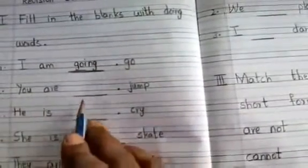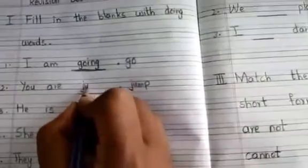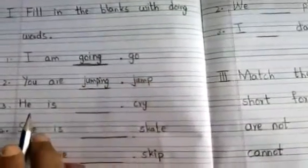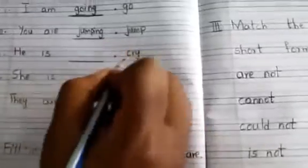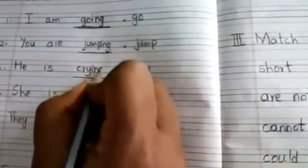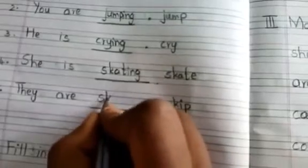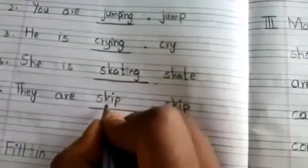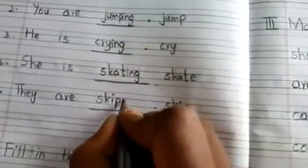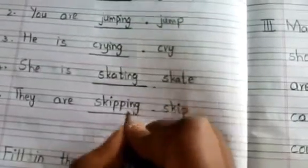Second one: 'You are dash, jump.' What you have to do — j-u-m-p-i-n-g, jumping. Okay, 'He is dash' — cry is given, so we have to write crying. You have to add -ing to the words given here. 'She is skating.' Then 'they are skipping' — for skipping, you have to write s-k-i-p, then add p and then -ing. Skipping.